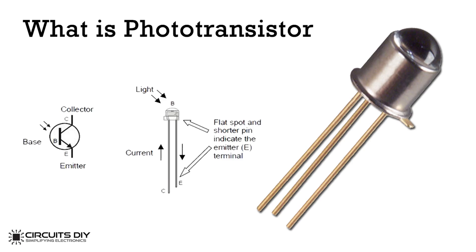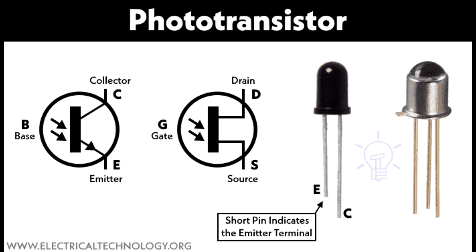Operation of a phototransistor: The operation revolves around the conversion of light into an electrical signal, leveraging the properties of a transistor and the photoelectric effect. When light comprising photons strikes the base region, the photons are absorbed by the semiconductor material, usually silicon. The energy from the absorbed photons excites electrons, creating electron-hole pairs in the base region — similar to the photoelectric effect.